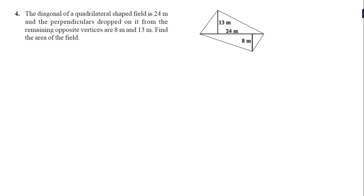Now question number 4: the diagonal of a quadrilateral-shaped field is 24 meters, and the perpendiculars dropped on it from the remaining opposite vertices are 8 meters and 13 meters. Find the area of the quadrilateral. First, we write the area of a quadrilateral formula: area equals diagonal D into (h1 plus h2), with the diagonal written outside.